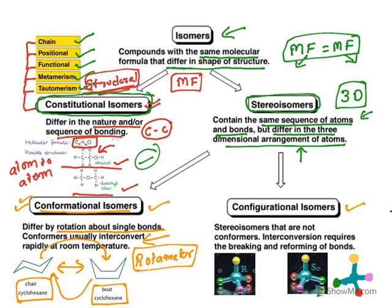The other type is configurational isomers — stereoisomers that are not conformers. They cannot be interconverted by simple rotation; interconversion requires breaking and reforming of bonds. Look at this molecule and its mirror image. Most students have a doubt between conformational and configurational — remember a conformer is just a rotamer. But configurational isomers are not like rotamers. Here you have a molecule and in the mirror you get its mirror image.